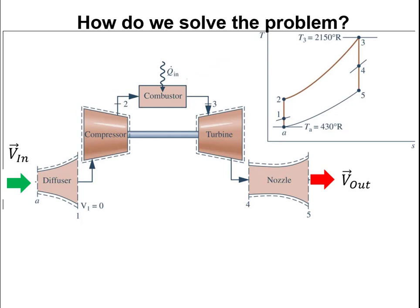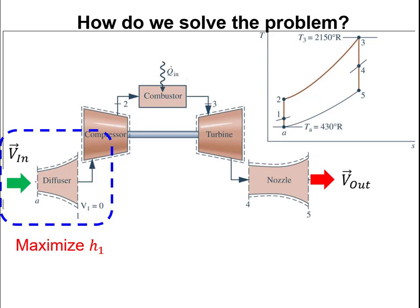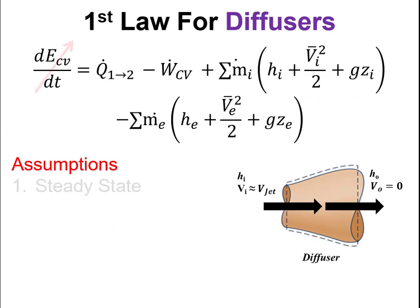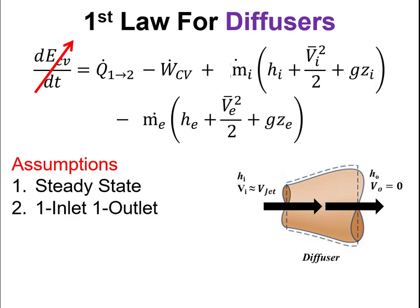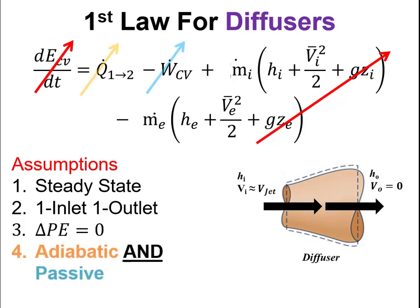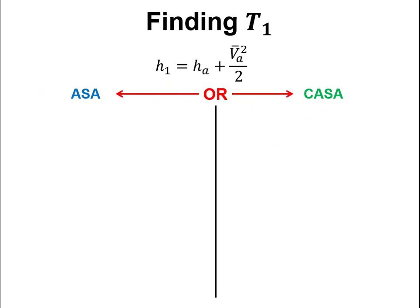We'll march through component by component doing first law analyses. The first component is the diffuser, whose purpose is to maximize h1 by harvesting the incoming kinetic energy to increase enthalpy before the fluid reaches the compressor. We assume steady state, one inlet and one outlet, zero change in potential energy, and that the diffuser is adiabatic and passive. We also assume the velocity at the diffuser exit, inside the engine at state 1, is negligible.